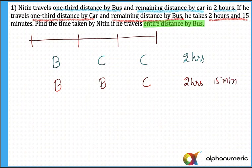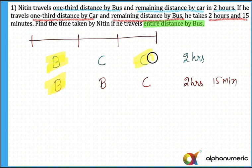If you observe, in both cases he travels the first part by bus and the last part by car. So the increase of 15 minutes happened because of what? Because he switched the middle part from car to bus. The moment he switched from car to bus for the middle part, there is an increase of 15 minutes.